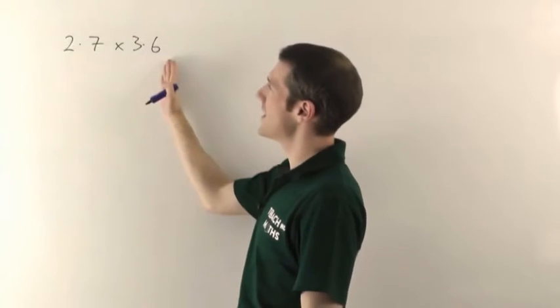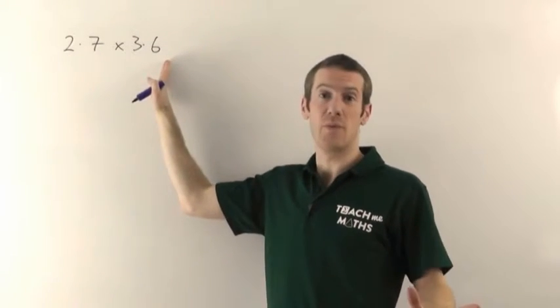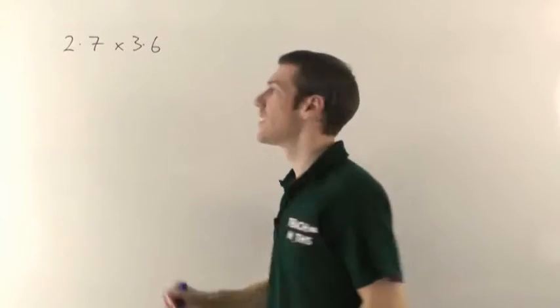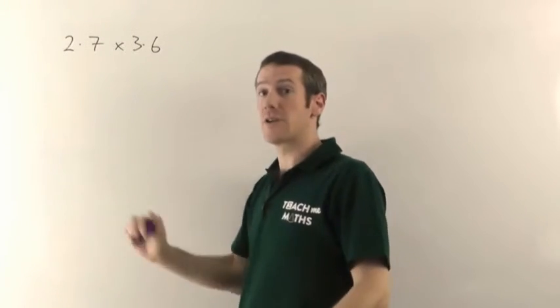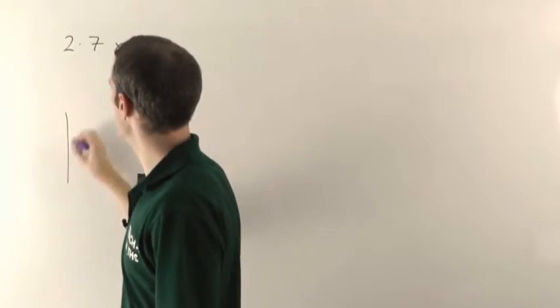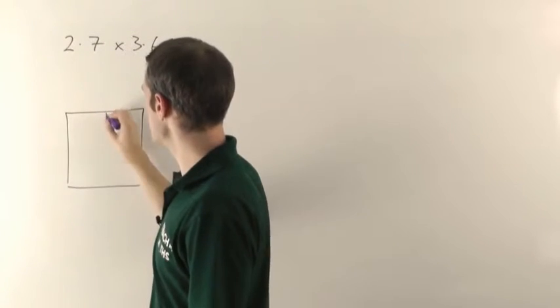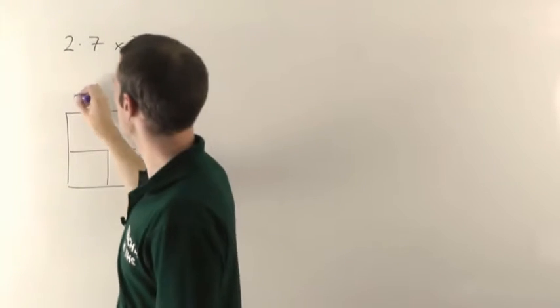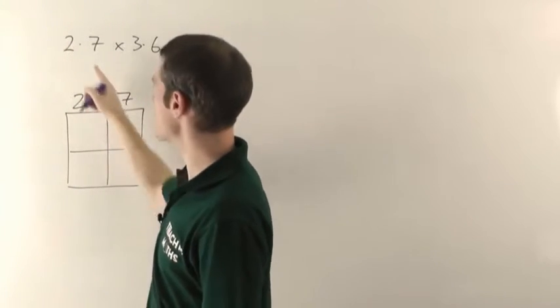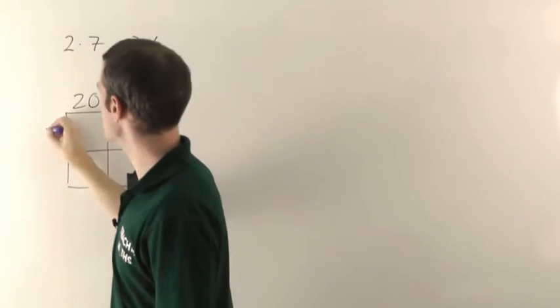The key thing is here, just ignore all the decimal points. Pretend they're not there. So we're going to do 27 times 36. By any means you like, as I say, I'm going to use the grid method. So we have a 2×2 grid, because it's a two digit number by a two digit number. So it's going to be 27, because we're ignoring the decimal point, times 36.